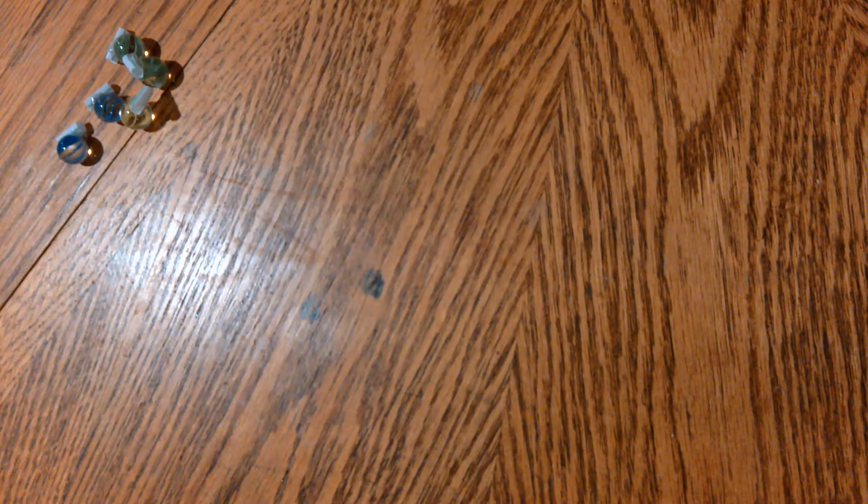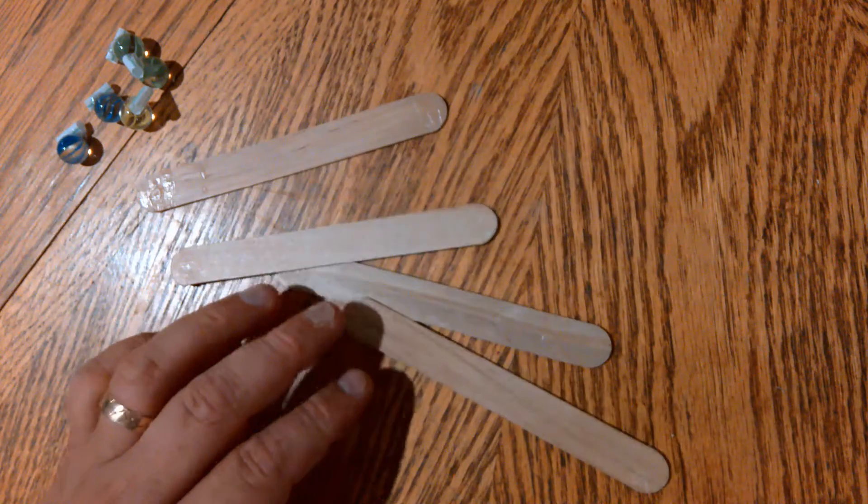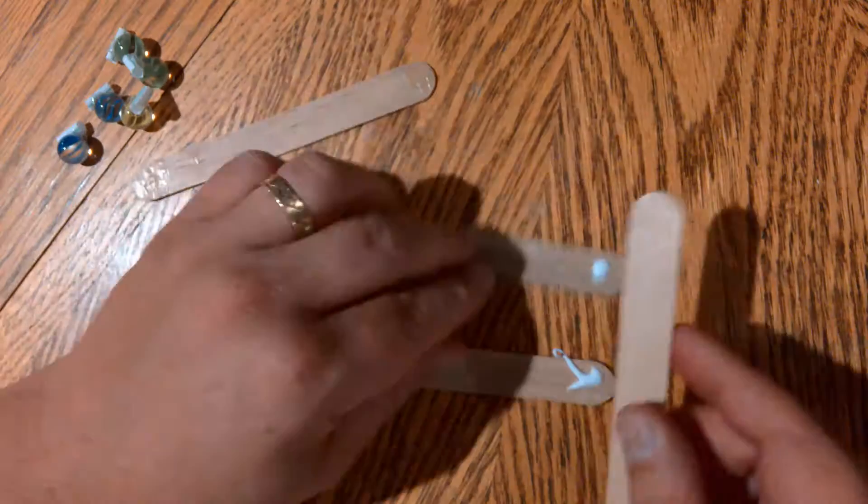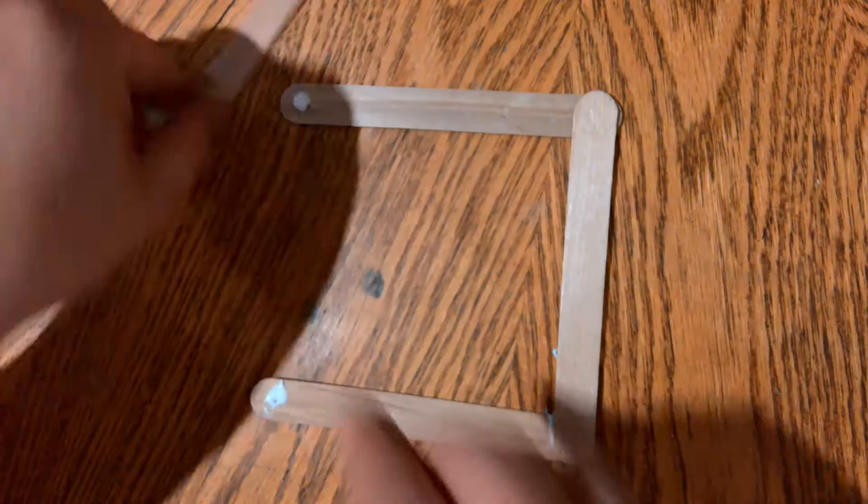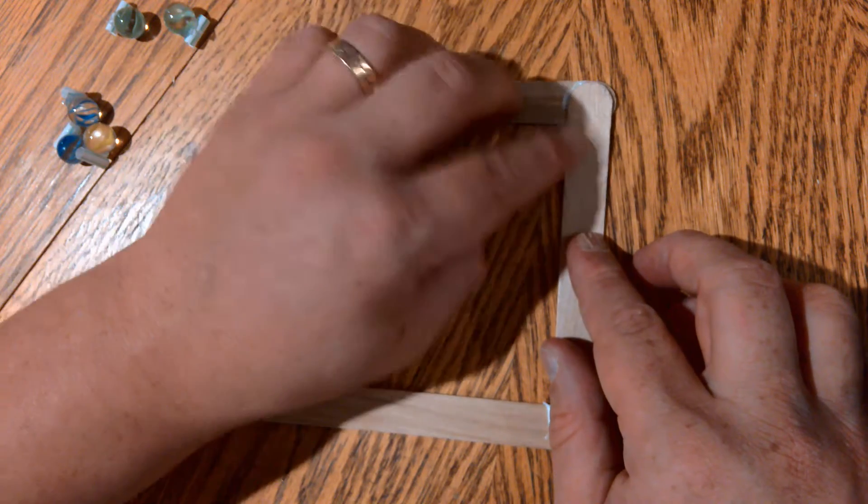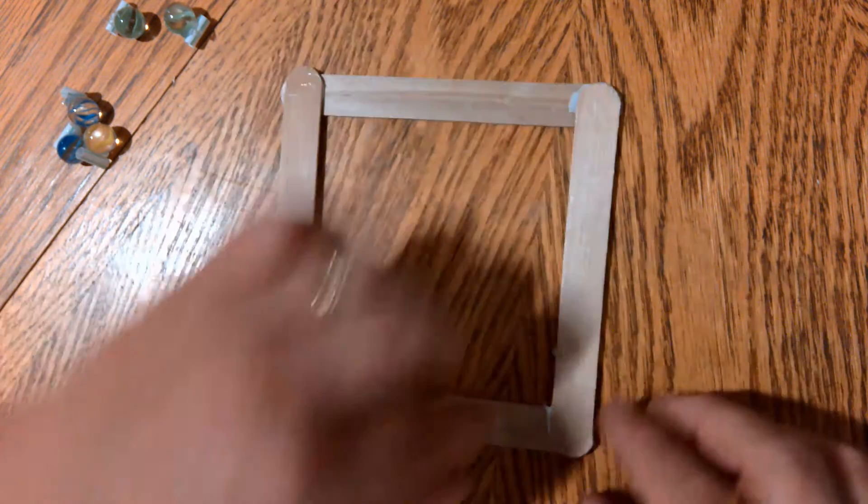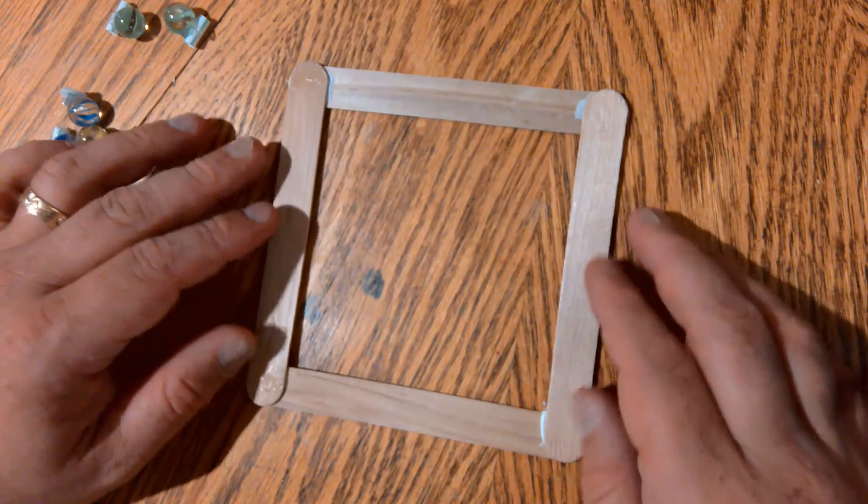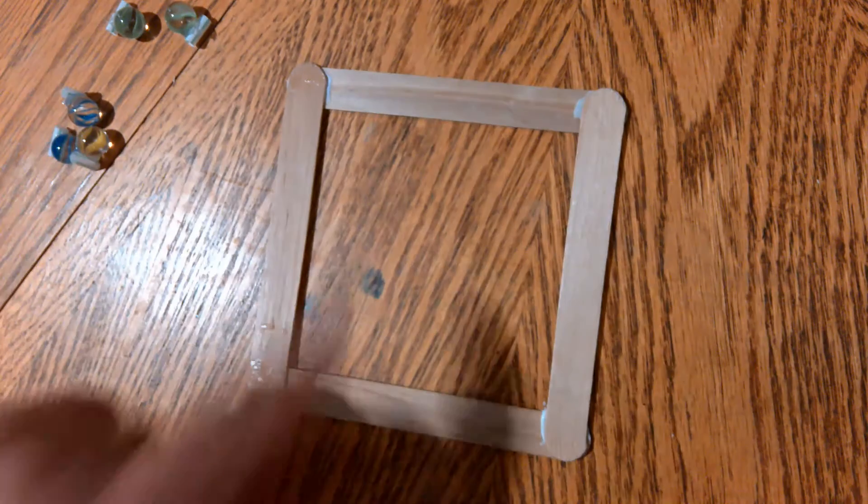To make the frame for the Newton's Cradle, start with four craft sticks and glue them together. Make sure you have the ends as flush as possible.